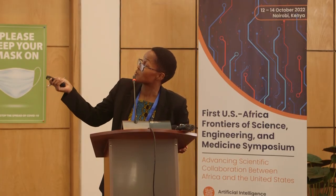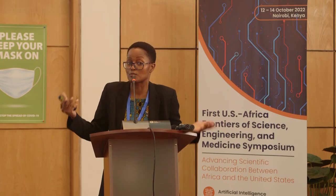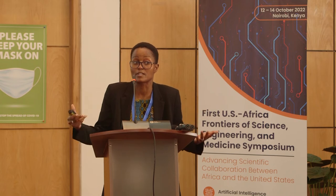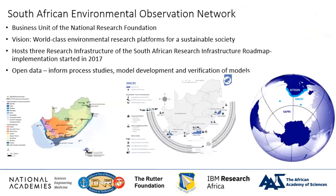That doesn't mean we don't need ground observations. What I'm showing here is supposed to be 24-hour rainfall for one specific day over Botswana. These are ground observations from the Botswana Meteorological Services; this is a rainfall product from NASA; this is a reanalysis from Europe, considered the best; and this is a rainfall product from the University of Reading. All these observations look so different from one another — so what should models be targeting and how should we improve them?